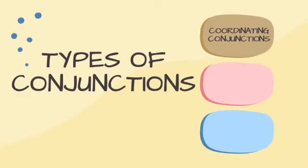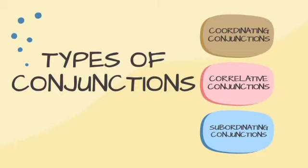Now let's talk about the types of conjunction. There are three kinds: coordinating conjunctions, correlative conjunctions, and subordinating conjunctions. Since there are three types, this video will not cover all of them. This is Part One, so we will focus only on the first type: coordinating conjunctions.